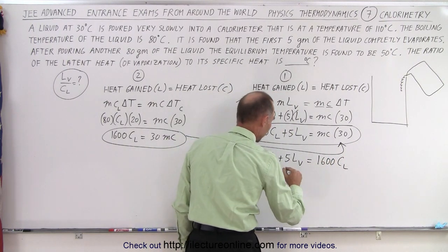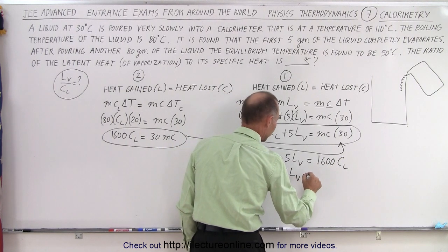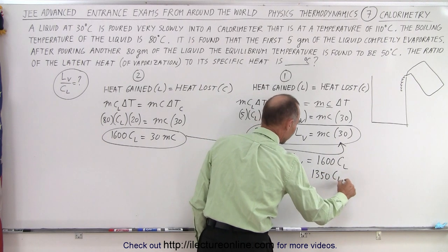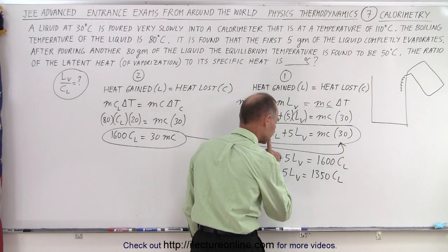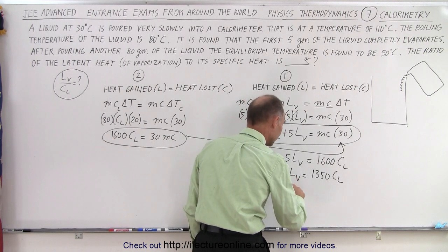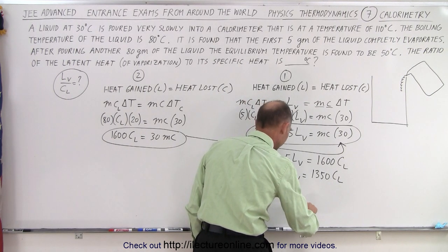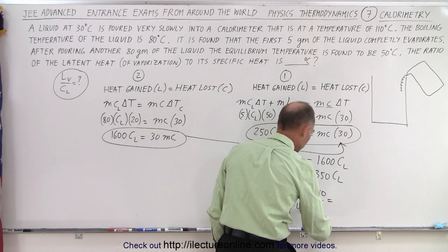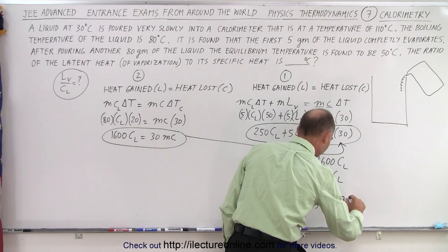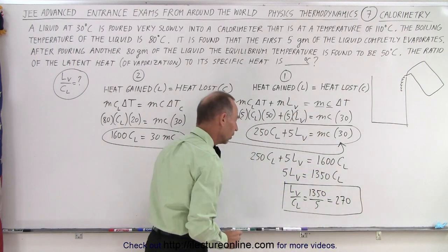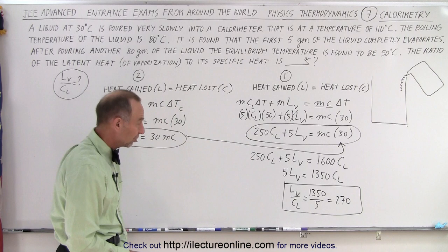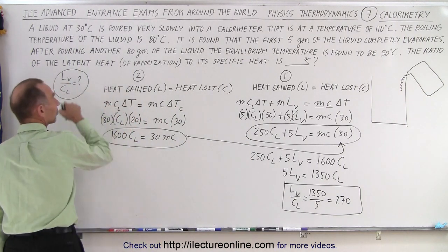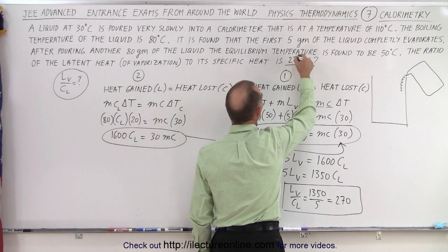So now we have 250CL plus five times the latent heat of vaporization equals 1600CL. Moving this over to that side, we have 5LV is equal to 1600 minus 250, that would be 1350CL. Or finally, we can say that LV divided by CL, so we have LV divided by CL is equal to 1350 divided by 5, which is 270. So we can see that the ratio between the latent heat of vaporization and the specific heat of the liquid is 270, so that's the answer that goes in here, the ratio is 270.